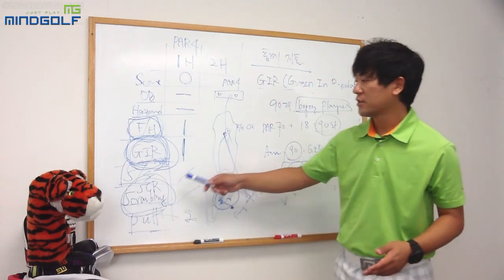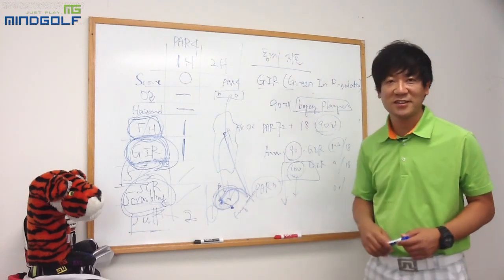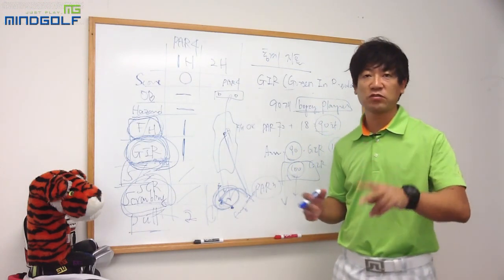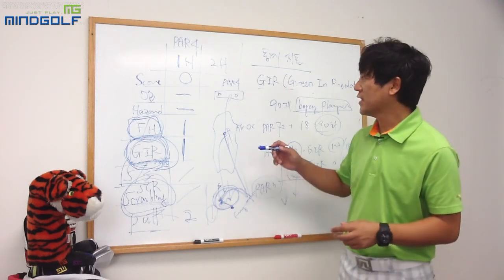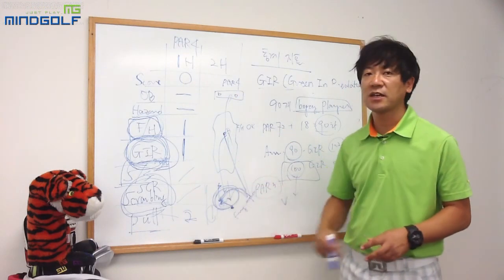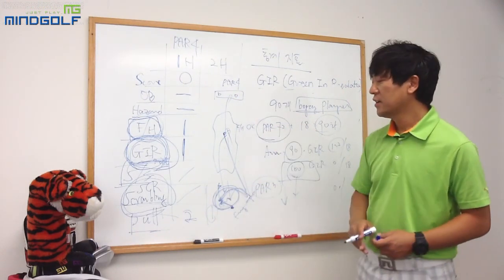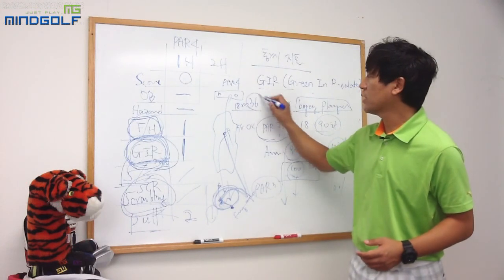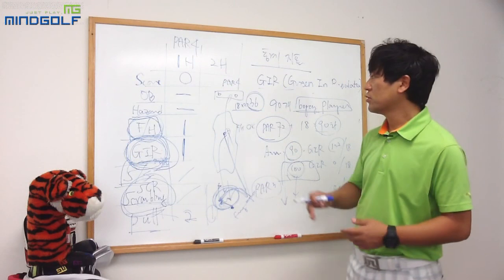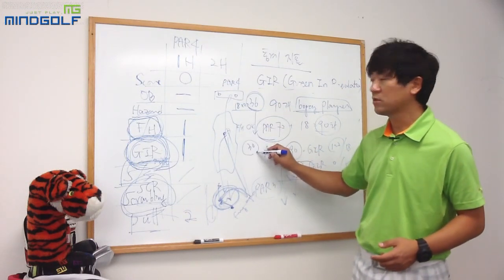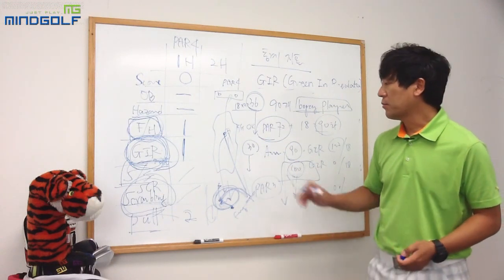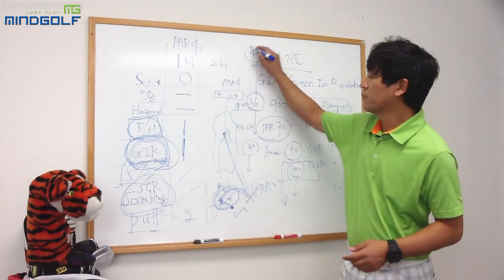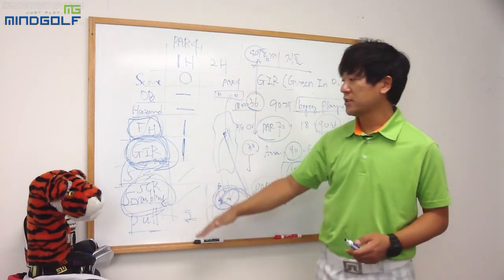퍼팅 지표는 매 홀 퍼팅 두 개를 기준으로 합니다. 파72홀 기준으로 18홀 곱하기 2개, 36개 정도 하면 잘하는 퍼팅이라고 합니다. 80대 이하로 치시는 분들은 30개 근처를 하고, 90~100개 이상 쪽으로 가면 3퍼트, 4퍼트를 하기 때문에 40개 이상 치시는 경우도 있습니다.